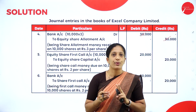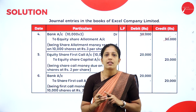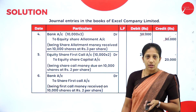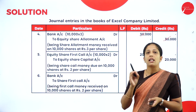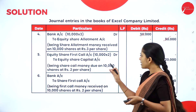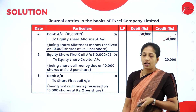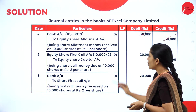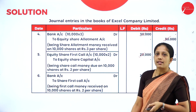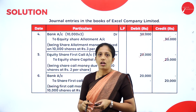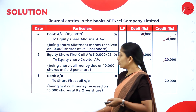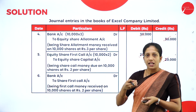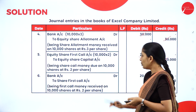For the first and final call stage, the fifth entry is the due entry: Equity Share First and Final Call Account Dr. to Equity Share Capital Account — 10,000 × ₹2 = ₹20,000. Narration: equity share first and final call money due on 10,000 shares of ₹2 per share. The sixth entry is receiving of first and final call money: Bank Account Dr. to Equity Share First and Final Call Account — ₹20,000.